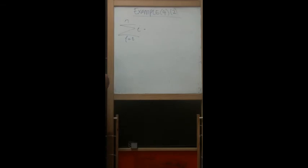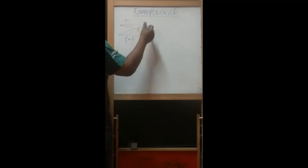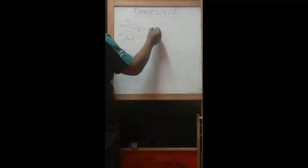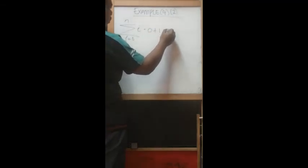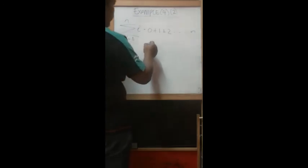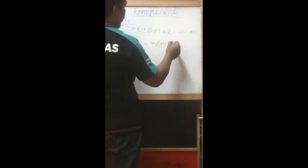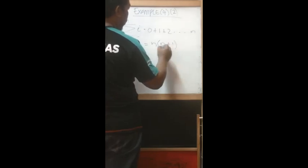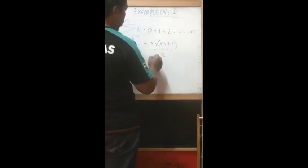The pattern we observed is similar to summation formula number 2. Please refer to formula number 2, where we have the summation of i from i equals 0, increasing by plus 1, plus 2, until n. This equals n times (n+1) over 2.